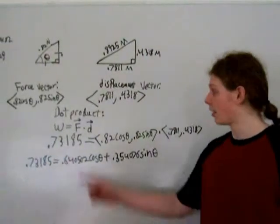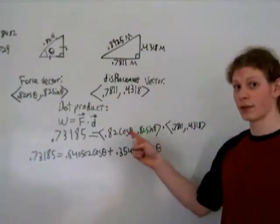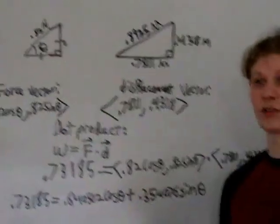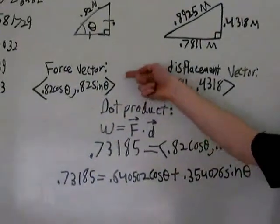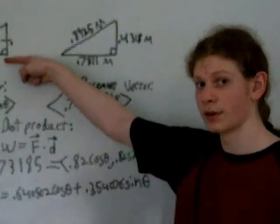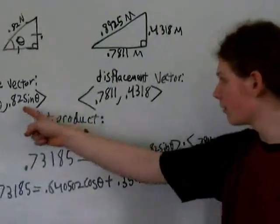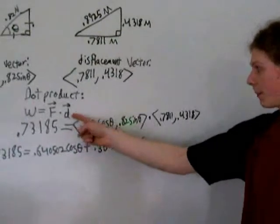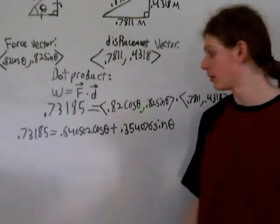By taking the dot product of the force vector and the displacement vector, we helped to find what theta equals. Because we tried to pull up at a 45 degree angle, but we couldn't really measure that. So, we know that the force vector is going to be 0.82 times the cosine of theta for the x component, and for the y component, it would be 0.82 times the sine of theta. So, we take the dot product of those, we dot the force vector with the displacement vector, and we know what the work is because we solved for it earlier.